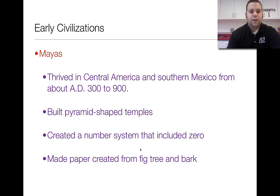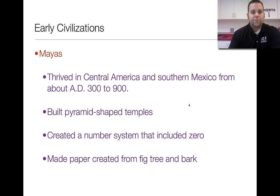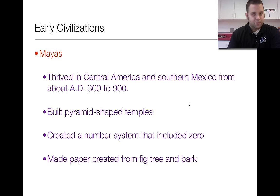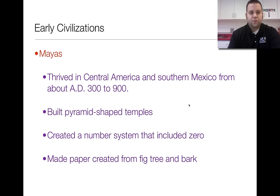The Mayas were a group that thrived in Central America and Southern Mexico from about 300 to 900 A.D. We're talking places like Belize, Guatemala, Honduras, and the Yucatan Peninsula in Mexico. They built pyramid-shaped temples with four sides that came to a point at the top. They also created a number system that included zero, which is important because zero is a place marker — it shows you where you have nothing. And lastly, they created paper from fig tree bark. The earliest papers are fibrous and rough in texture, not smooth like the paper we write on today.